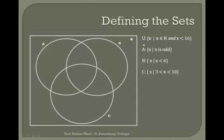A is going to be the numbers in our universe that are odd: one, three, five, seven. B is going to be all our numbers in our universe that are less than six. And C is going to be all our items between three and ten. Note that I'm using strictly less than here in all of these, so for instance, six is not going to be a member of B.